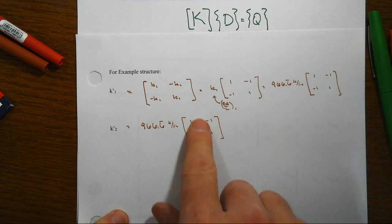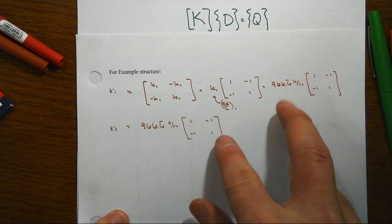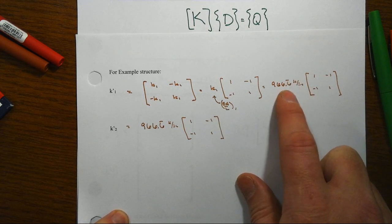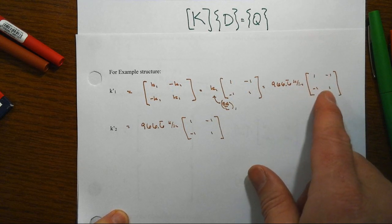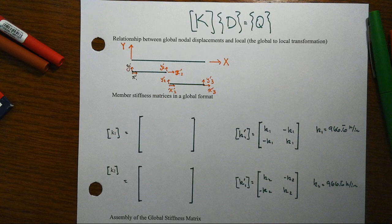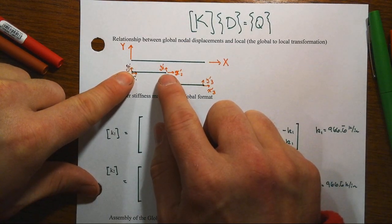But keep this overall format of the element stiffness matrix in mind. Both of them, because of the members being identical, also look numerically identical, but we've got this EA over L of the member and 1, -1, -1, 1 in the matrix. And remember that what that's doing is relating member end force displacement relationships at the ends of the member.